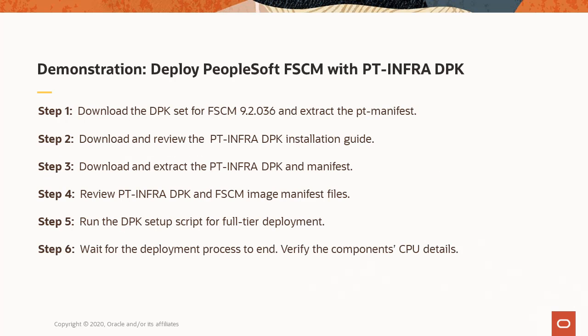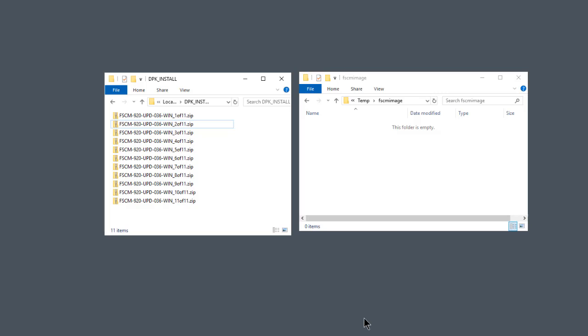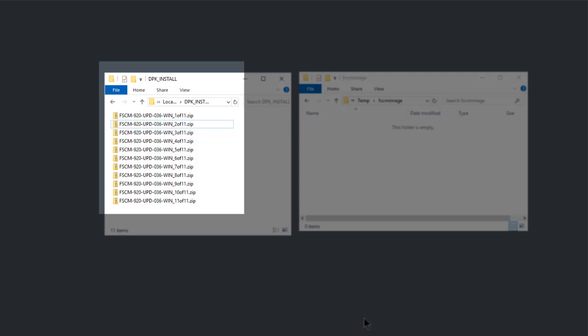For this demonstration, we use the PT-Infra-DPK for a full-tier deployment of an FSEM image. You will need to review the installation guide for the PT-Infra-DPK. Download the PT-Infra-DPK and extract the manifest so that you can compare it with the manifest from the FSEM image, then run the DPK setup script and check the versions for the components. We previously downloaded the 11 DPKs for the FSEM 9.2.36 update image from My Oracle Support and saved them in the directory dpk-install. We will use this image to install a full PeopleSoft environment.